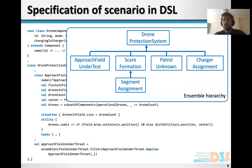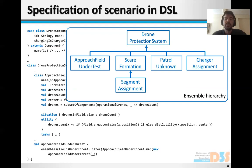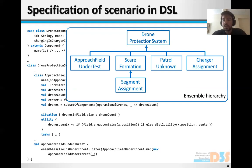The patrol unknown ensemble is created between a field that has an unknown status — we don't know whether it needs protection or not — so we need to dispatch a drone to that field and update its status. Charge assignment, contrary to the other three ensembles, is formed around the charger when a drone is in need of charging.